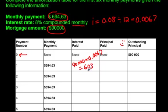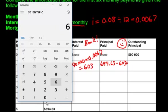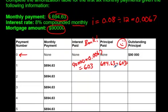The bank is getting $603. The principal paid is the happy amount — that's how much money is actually going down on your mortgage. To figure that out, you take the monthly payment, $694.63, minus $603 for the interest. The amount we get is the amount that actually went towards reducing your mortgage. Using the calculator: $694.63 minus $603 gives us $91.63. That's how much went to reducing your mortgage.